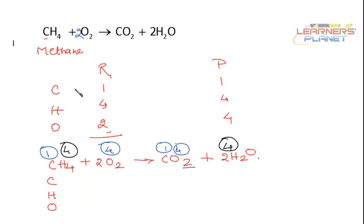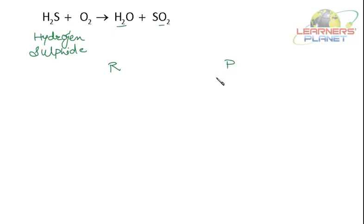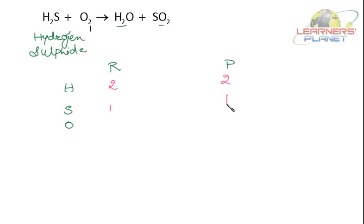Now let's take a few more equations — the reaction of hydrogen sulfide with oxygen giving water and sulfur dioxide. Again, the first step: reactant side and the product side. The elements present: hydrogen, sulfur, and oxygen. Number of atoms of hydrogen on the reactant side: 2; on the product side: 2. Number of atoms of sulfur on the reactant side: 1; product side: 1. Number of atoms of oxygen on the reactant side: 2; on the product side: 2 plus 1 = 3.